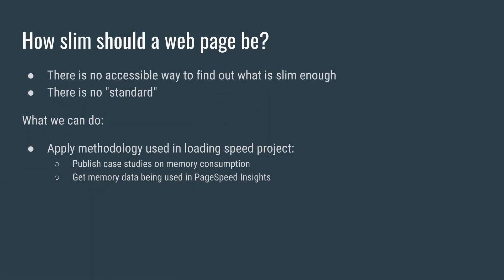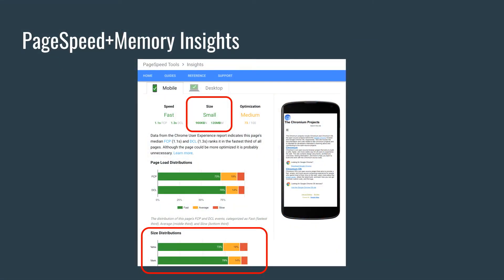Next question: how slim should a web page be? What is an acceptable size, for example, for a project management application on the web? Unfortunately, there is no accessible way to find out what is slim enough — there's no standard, there's no model. A few ways forward: learning from how we tackled the loading speed project, publish case studies on memory consumption, tie memory consumption to business metrics, and get memory data being used in PageSpeed Insights. Why not simply add a size category and then highlight: compared to the rest of the web or to other project management sites, your size is small so you're golden — or your size is big, you should improve, because you're going to crash on low-memory devices.